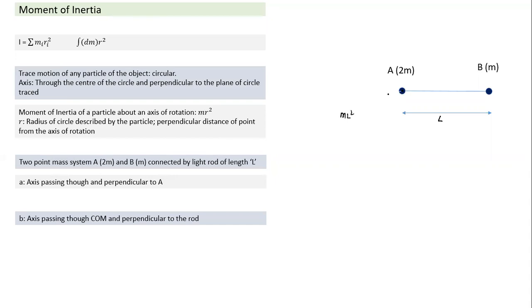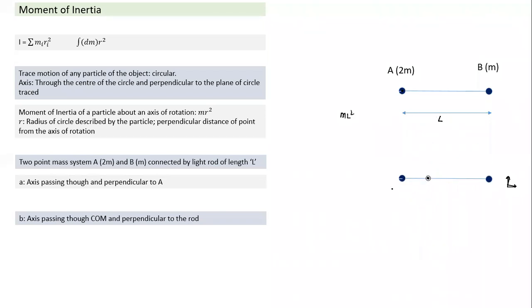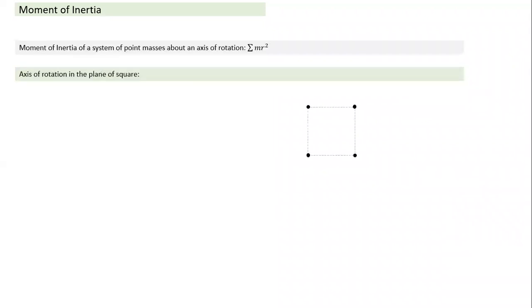We can also take an axis passing through the center of mass perpendicular to the rod. The center of mass is at a distance l/3 from one end. When rotated about this axis, each particle has a perpendicular distance r that we must identify. This illustrates that the same object has different moments of inertia depending on the chosen axis.